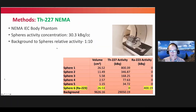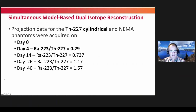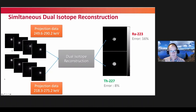Moving to thorium-227, where we'd like to image both thorium and radium, we investigated using a NEMA phantom where five spheres were filled with thorium and one with radium. By imaging at different days, we got different mixtures due to the decay of thorium into radium. Using two energy windows for simultaneous reconstruction, we get an image of the radium and of the thorium, and quantification shows about 16% error for radium and 8% for thorium.